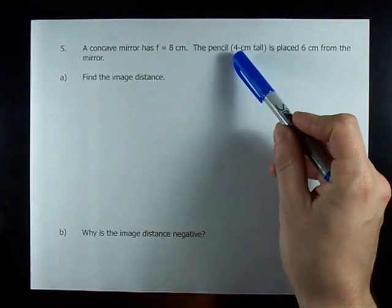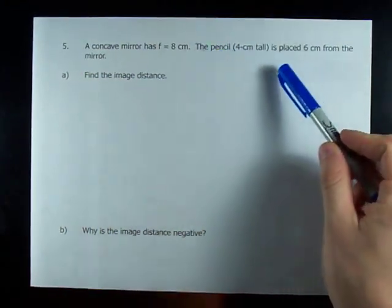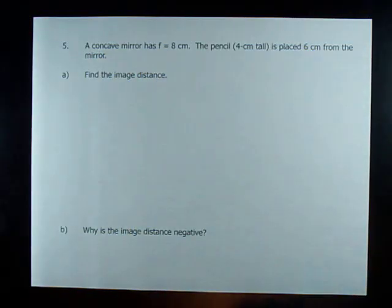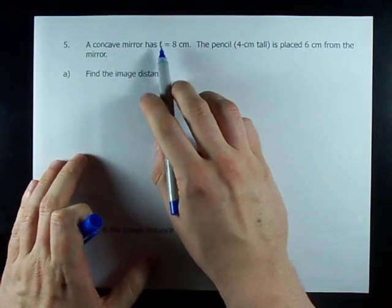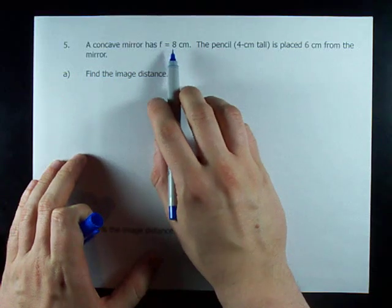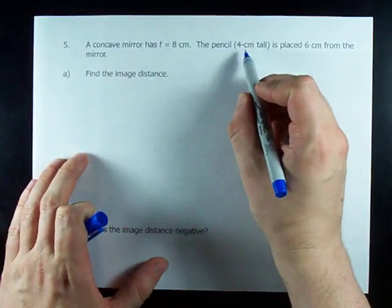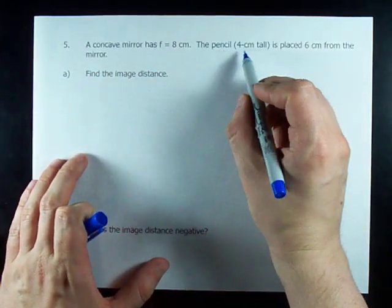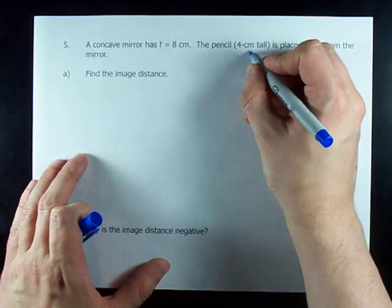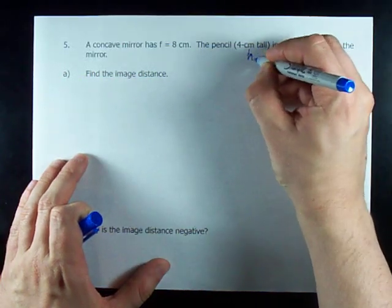We've got a 4 centimeter tall pencil and it's 6 centimeters away from the mirror. So we're given F is 8 centimeters. We have the height of the object, that is H_O, height of the object.